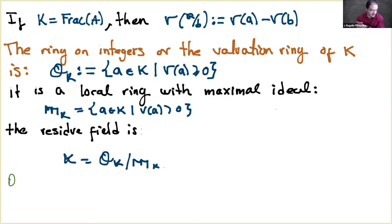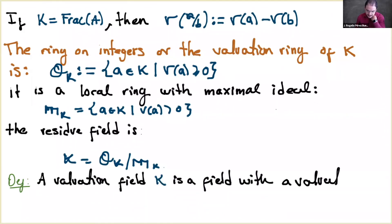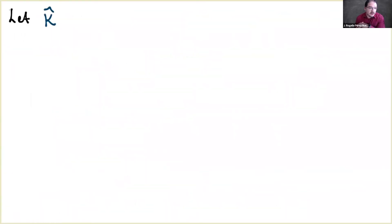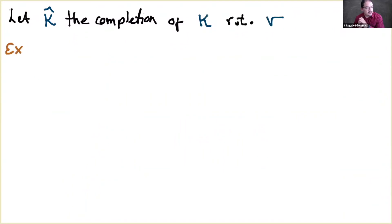If we need completeness we say complete non-Archimedean field; otherwise just non-Archimedean field. There is an exercise: if K is a complete non-Archimedean field with respect to v, and K' is an algebraic extension of K, then there is a unique valuation v' on K' extending v. Moreover, this extension is complete if and only if the extension is finite.